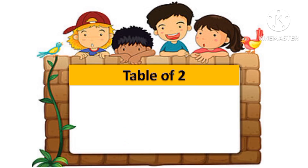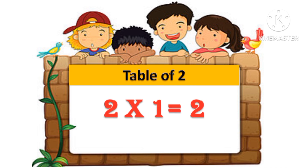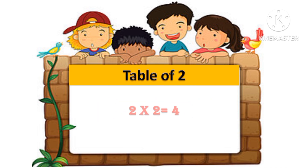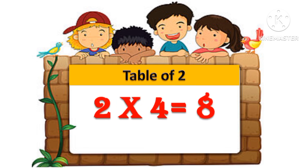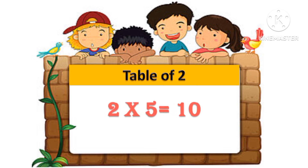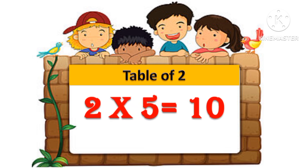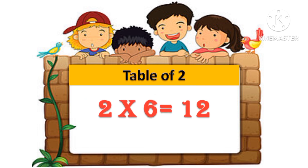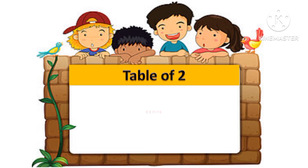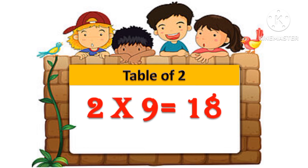Table of 2: 2 one's are 2, 2 two's are 4, 2 three's are 6, 2 four's are 8, 2 five's are 10, 2 six's are 12, 2 seven's are 14, 2 eight's are 16, 2 nine's are 18.